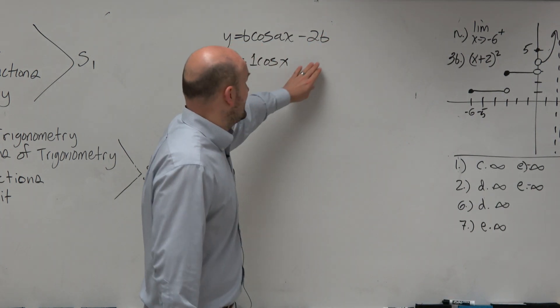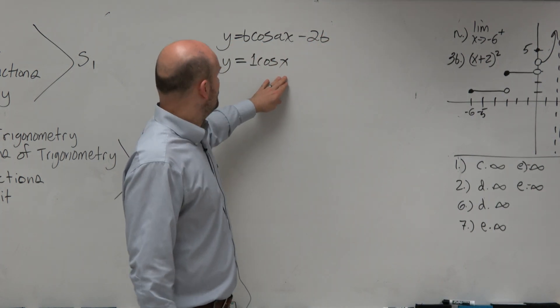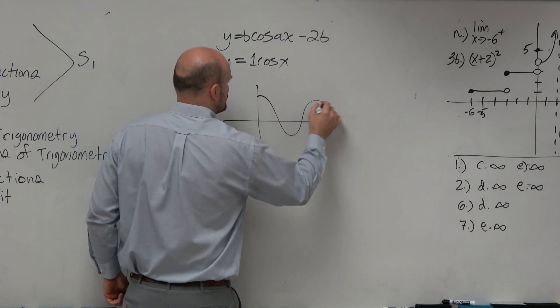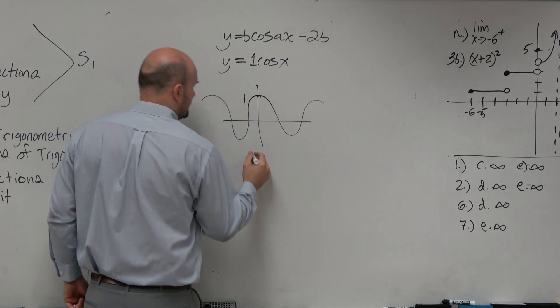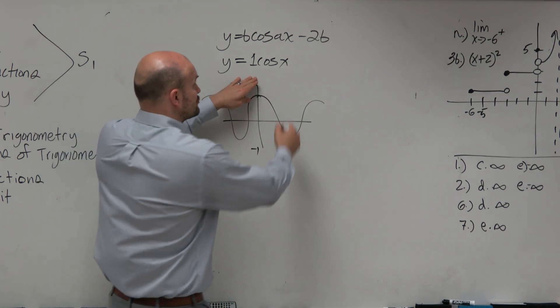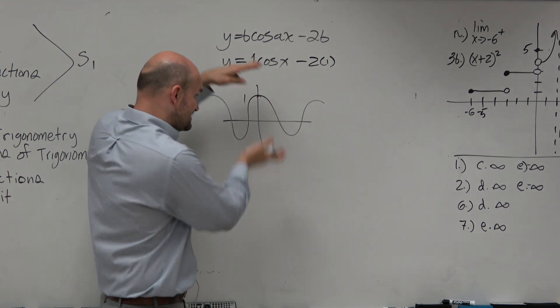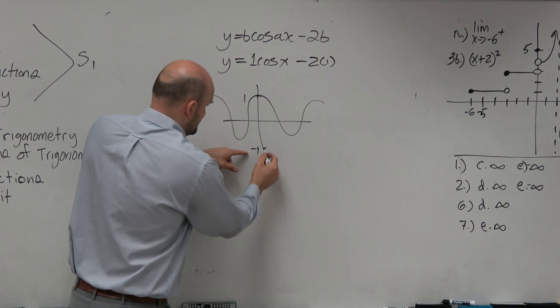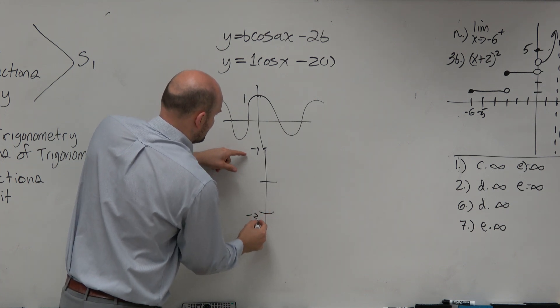Now, I'm not going to do the minus yet. I'm just going to say, why don't I just graph when B is 1? So if I graph it, it would do something like this. Goes up to 1, down to 1. Now, if I subtract 2 times 1, that's really subtracting 2. That's taking the graph down two units.